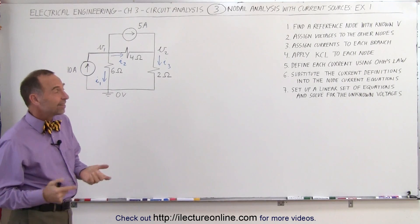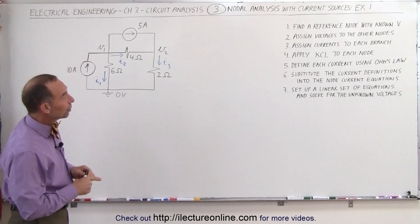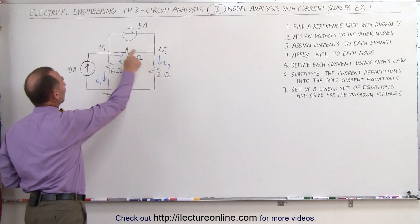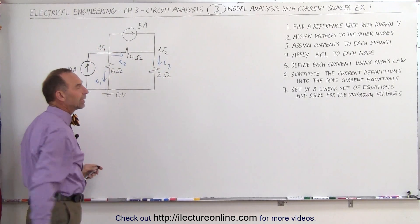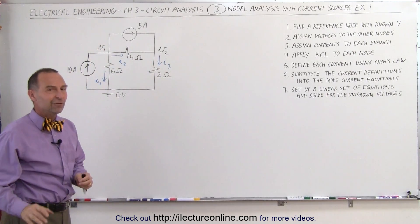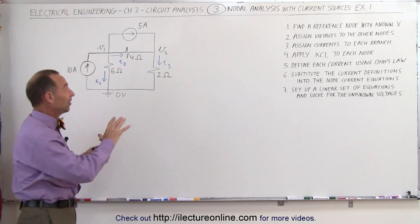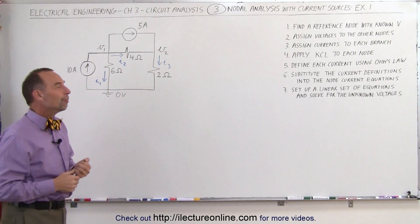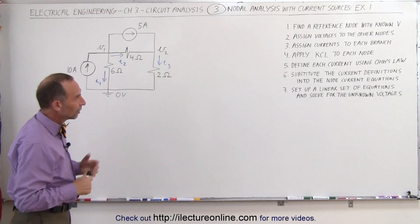We'll connect that to ground and call it zero volts — that will be our reference node. The second step is to assign voltages to the other nodes. There are two other nodes, and we've already got V1 and V2 labeled. This is actually the exact same circuit from the previous video, but now we're doing a numerical example.